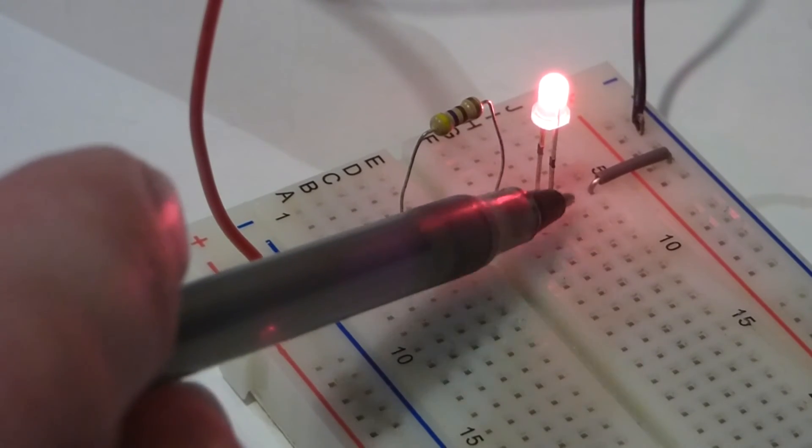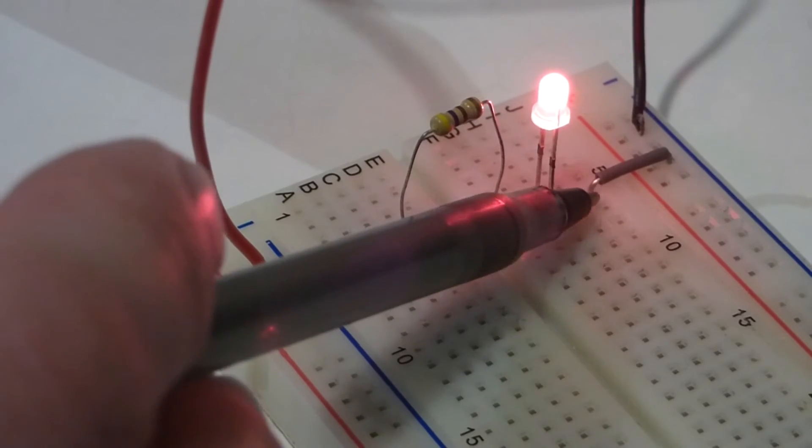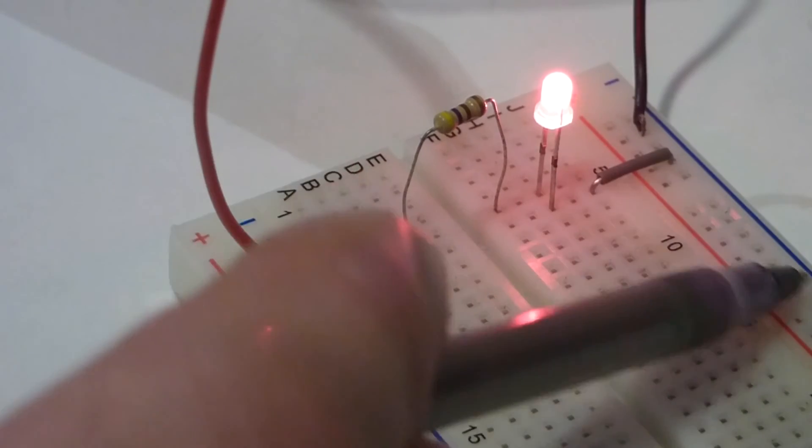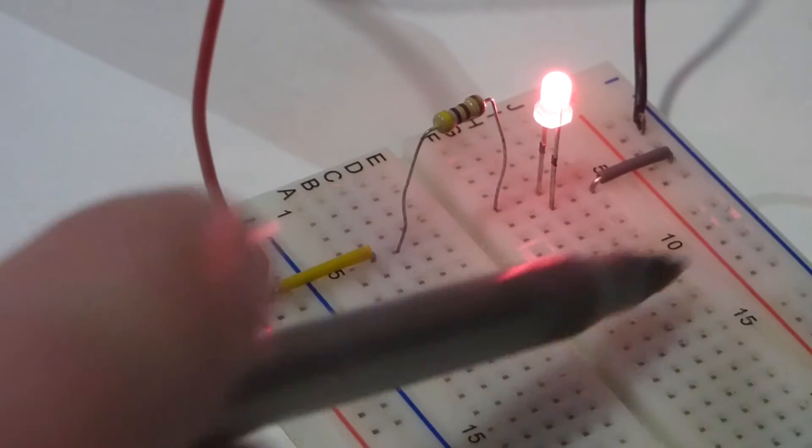And then so the short lead of the LED down here is connected to this jumper which goes to that row that the negative terminal is attached to. We often call this ground.